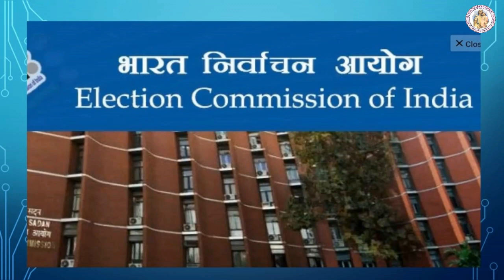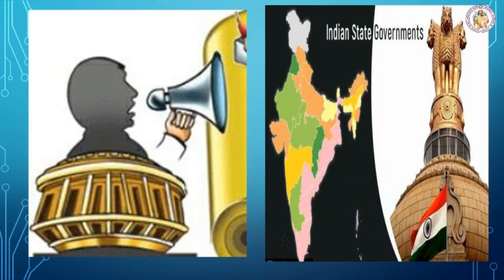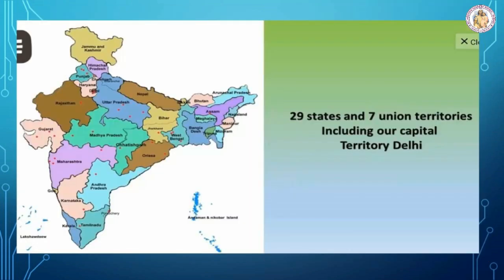The Election Commission of India conducts and monitors the election. After the election, the party which gets the more number of MLAs is declared as the majority party. The governor calls the leader of the majority party to form the state government. A party whose MLAs have won more than half the number of constituencies in the state is called the ruling party and forms the government. The other party which gets the next highest number of seats acts as the opposition party in the legislature.